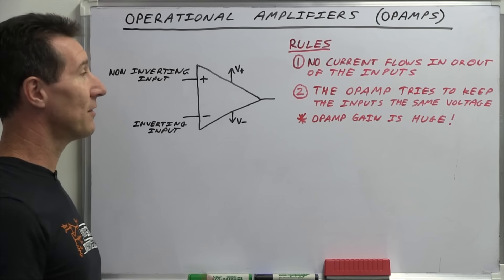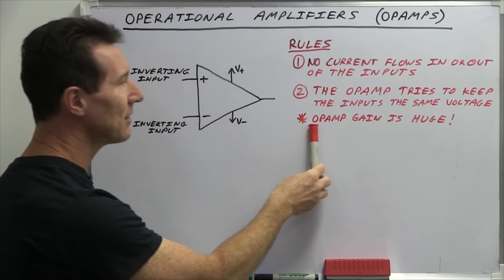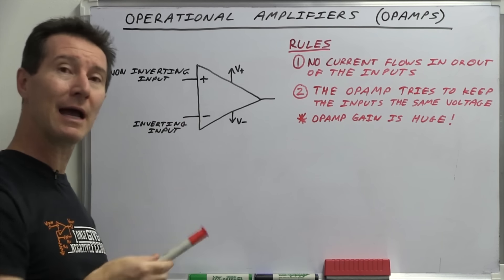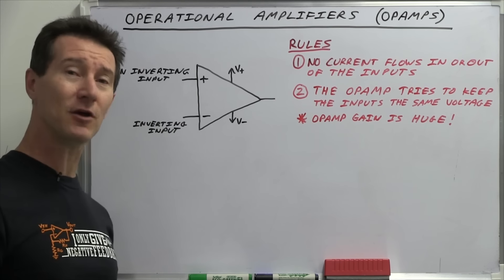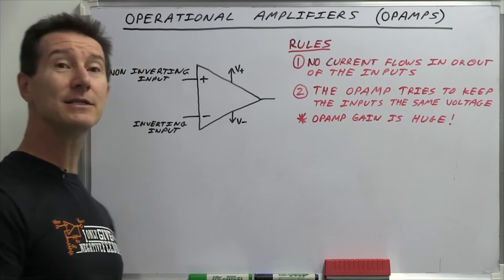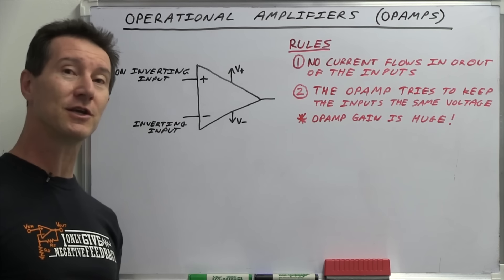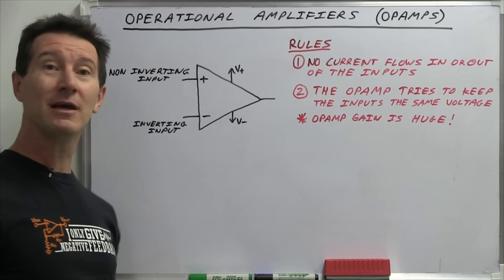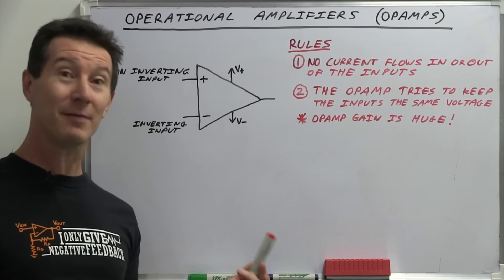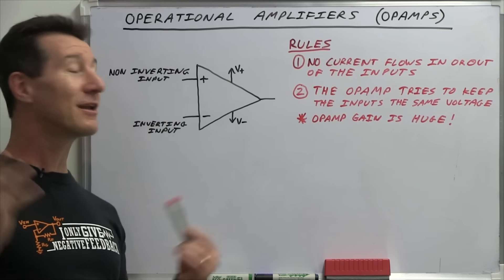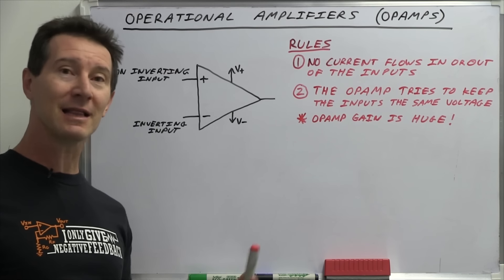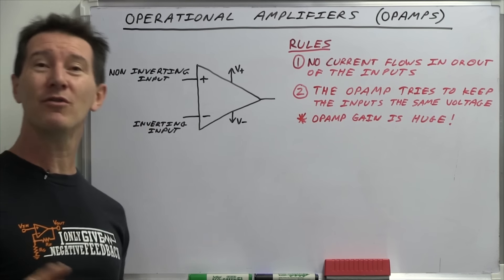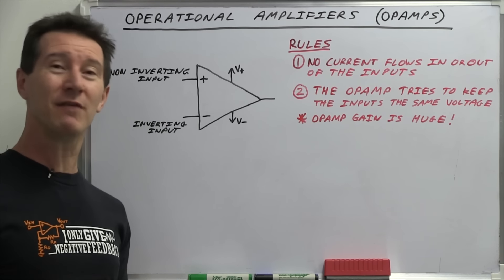Now, the reason they don't work as differential amplifiers is because the gain of the op amp — the internal natural gain — is enormous. And that's the first thing you need to know about op amps: it's not quite infinite, but you can think of it as infinitely large. It's like millions of times, and the data sheet won't even tell you.